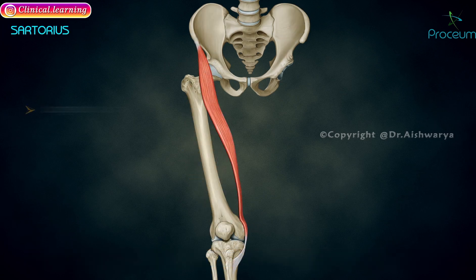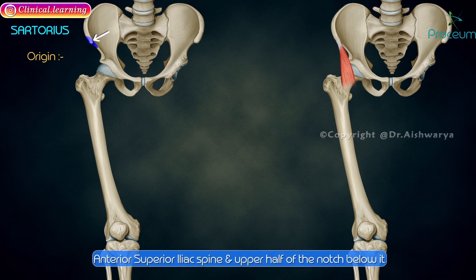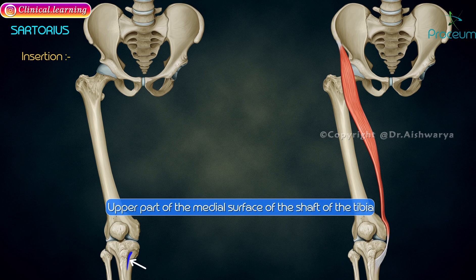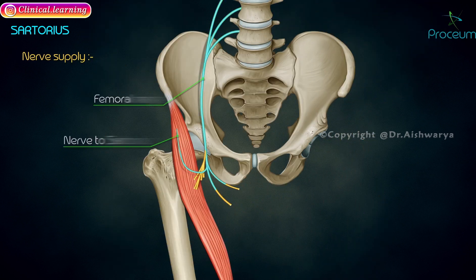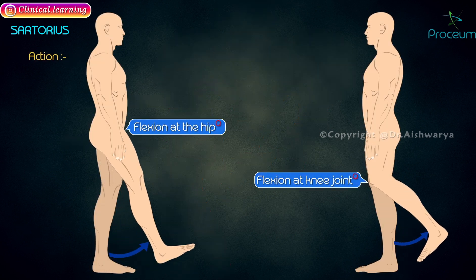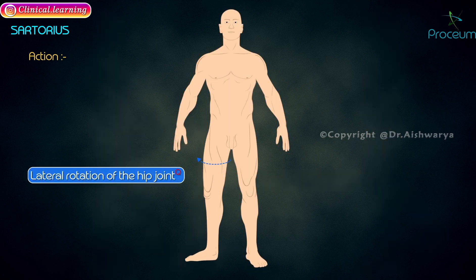Sartorius. It is the longest muscle in the body. It originates at the anterior superior iliac spine and upper half of the notch below it. It passes obliquely across the thigh to reach the posterior side of the lower end of the femur and is inserted in the upper part of the medial surface of the shaft of the tibia. Nerve supply is by the femoral nerve. Its actions are flexion at the hip and knee joint, abduction of the hip joint, and lateral rotation of the hip joint.